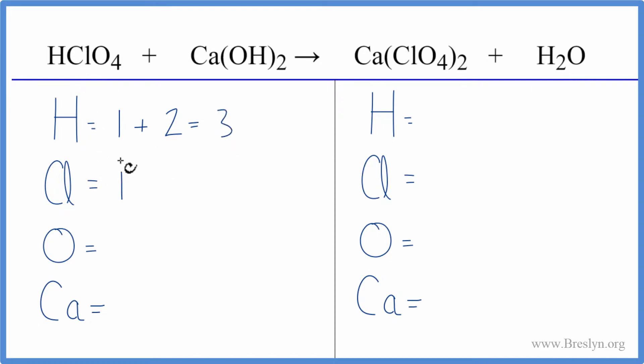Chlorines, we have just the one. Oxygen, we have four. Plus, this two applies to everything in parentheses, two times the one, so two oxygens there. That gives us six and one calcium.